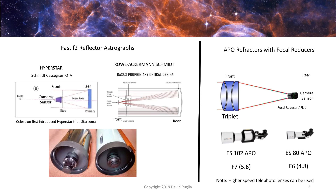The first is the Hyperstar. Interestingly, it was introduced by Celestron. They had it for a year or two and then abandoned it, and then Starizona took it over. If you want a Hyperstar, you buy it from Starizona in Tucson, Arizona. They're very fast. The characteristic is you take out the secondary mirror on a Schmidt-Cassegrain optical tube assembly, insert the lens in the front — you can see in the picture — and the camera sensor sits on top. A C14, for example, is an F1.9.